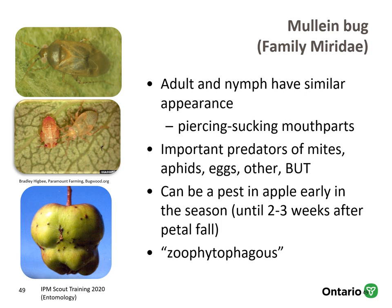Mullein bug is a friend and a foe in apple depending on the time of year. It's a heteroptera — a true bug — and adults and nymphs have similar appearances with piercing-sucking mouthparts. They are important predators of mites, aphids, and insect eggs. However, they can be a pest early in the season in apple, usually until two to three weeks after petal fall, because it takes time for their prey to build up on apples. Until their prey are present in abundance, they will also plant feed, and that can cause injury.